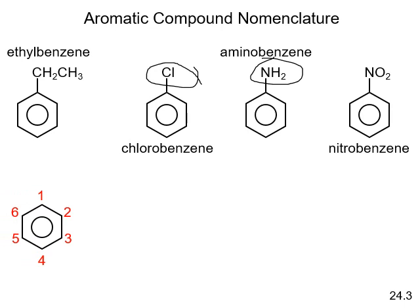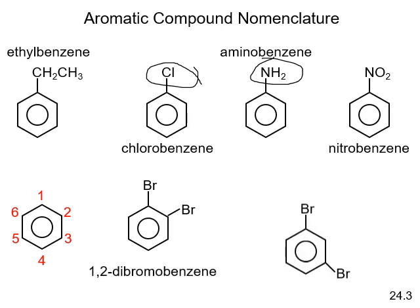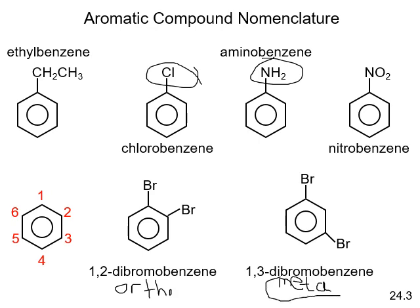Numbering around the ring is not needed if there's only one functional group, but if there's more than one you have to specify where it is. For example, 1,2-dibromobenzene means they're right next to each other; 1,3-dibromobenzene is also common. In the literature you might see the prefix 'ortho' meaning they're right next to each other, and 'meta' meaning they're in the 1,3 position. These prefixes are only used for di-substituted benzenes.